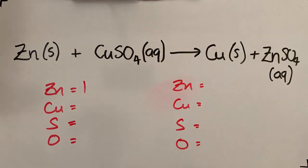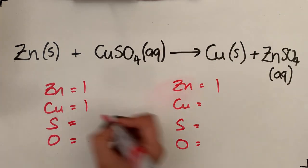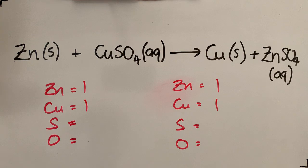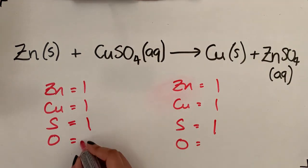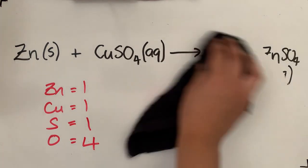You've got one zinc on that side, one zinc on that side, one copper on that side, one copper on that side, one sulfur on this side, one sulfur on that side, four oxygens on this side, four oxygens on that side, so that one is already balanced. Try attempting questions 2 to 6 on the rest of that exercise. I'm going to move on to exercise number 5.